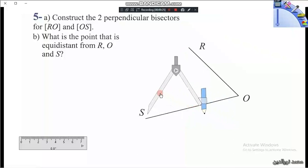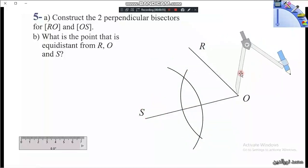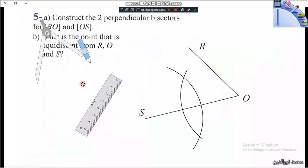So first of all, we put the needle on the extremity S and then we draw an arc of center S. With the same opening, we draw another arc of center O. And as we notice, the two arcs intersect at two points. We have to join them together to have the perpendicular bisector of the segment.